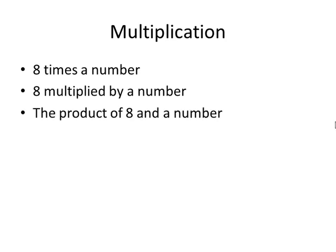Here are a few phrases for multiplication. 8 times a number, 8 multiplied by a number, or the product of 8 and a number, all translate to be 8x. One special one that we want to watch out for is the phrase twice a number. Twice is a multiplication problem multiplied by 2, so twice a number would be 2x.